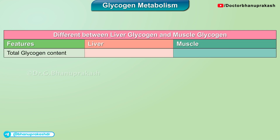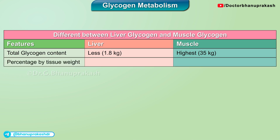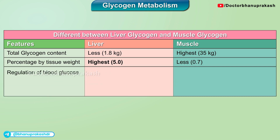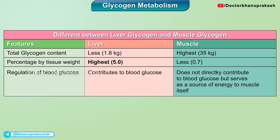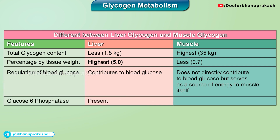Differences between liver glycogen and muscle glycogen. Total glycogen content in the liver is less than 1.8 kg, whereas in the muscle it is highest at about 35 kg. As a percentage by tissue weight, in the liver it is highest at about 5%, and in the muscle it is less at about 0.7%. Regarding regulation of blood glucose, liver glycogen contributes to blood glucose, whereas muscle glycogen does not directly contribute to blood glucose but serves as a source of energy to the muscle itself. Glucose-6-phosphatase is present in the liver and is absent in the muscle.